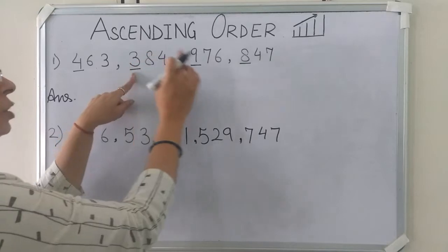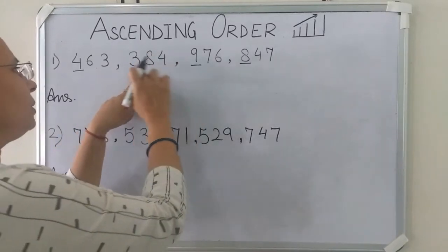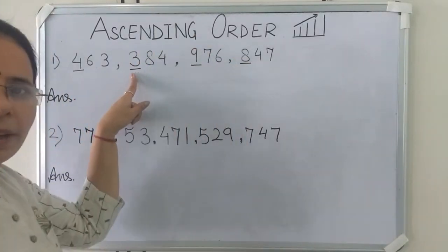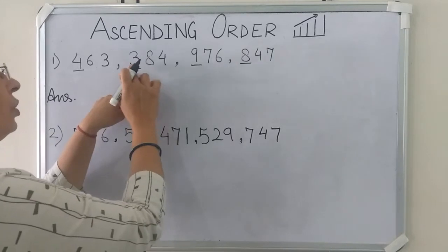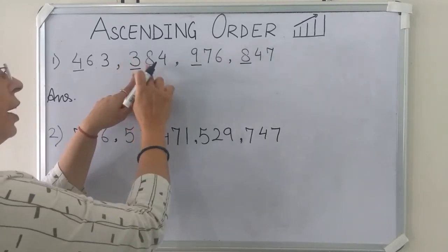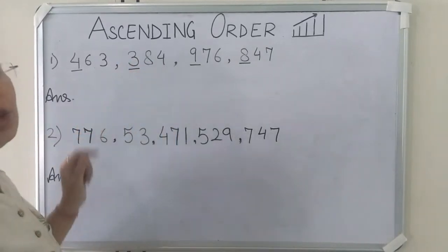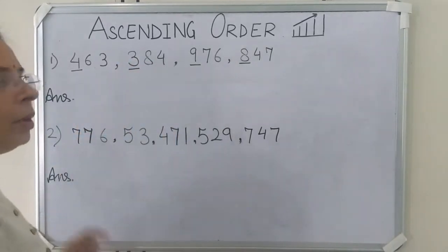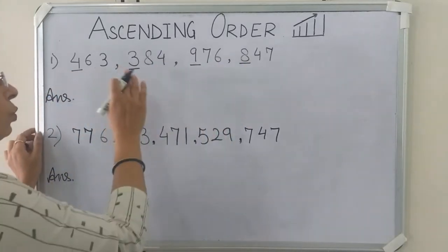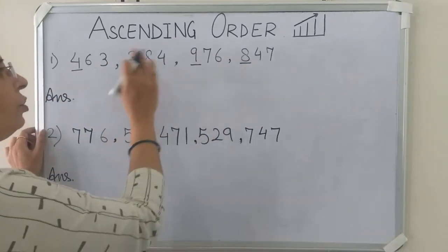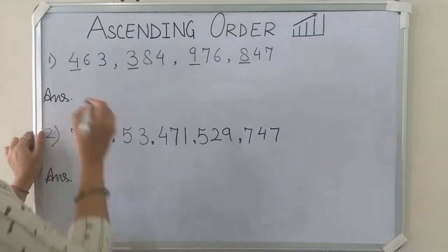Is 3 smaller than 9? Yes. Is 3 smaller than 8? Yes. It means 384 is the smallest number among these 4 numbers. So we will write 384.